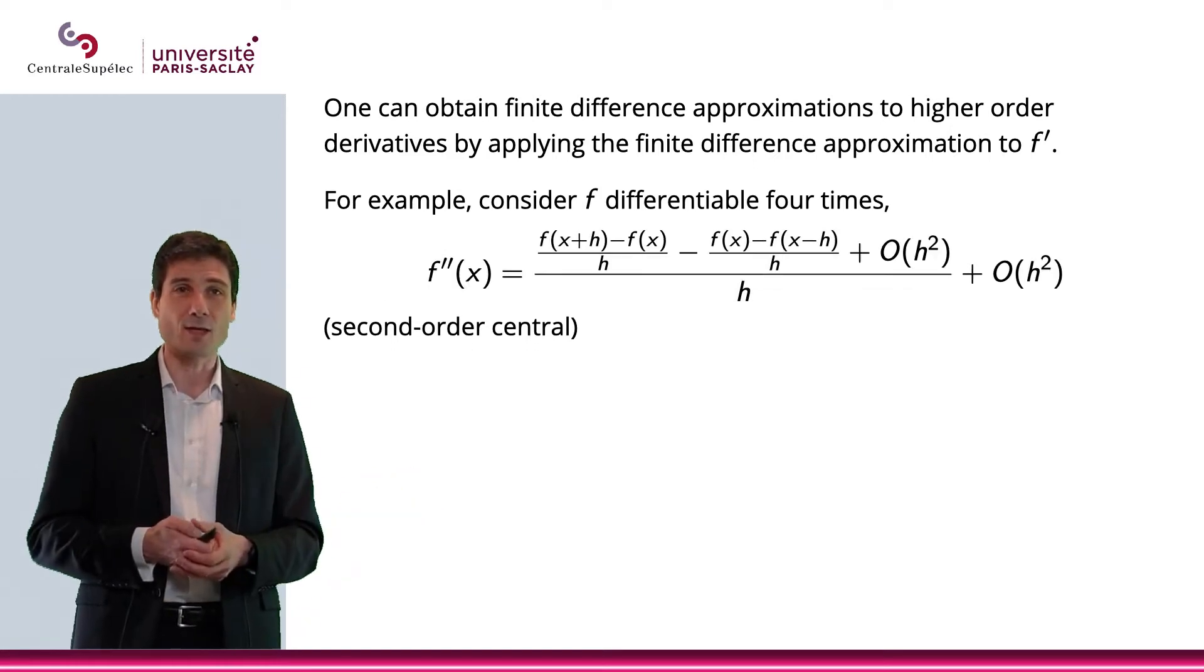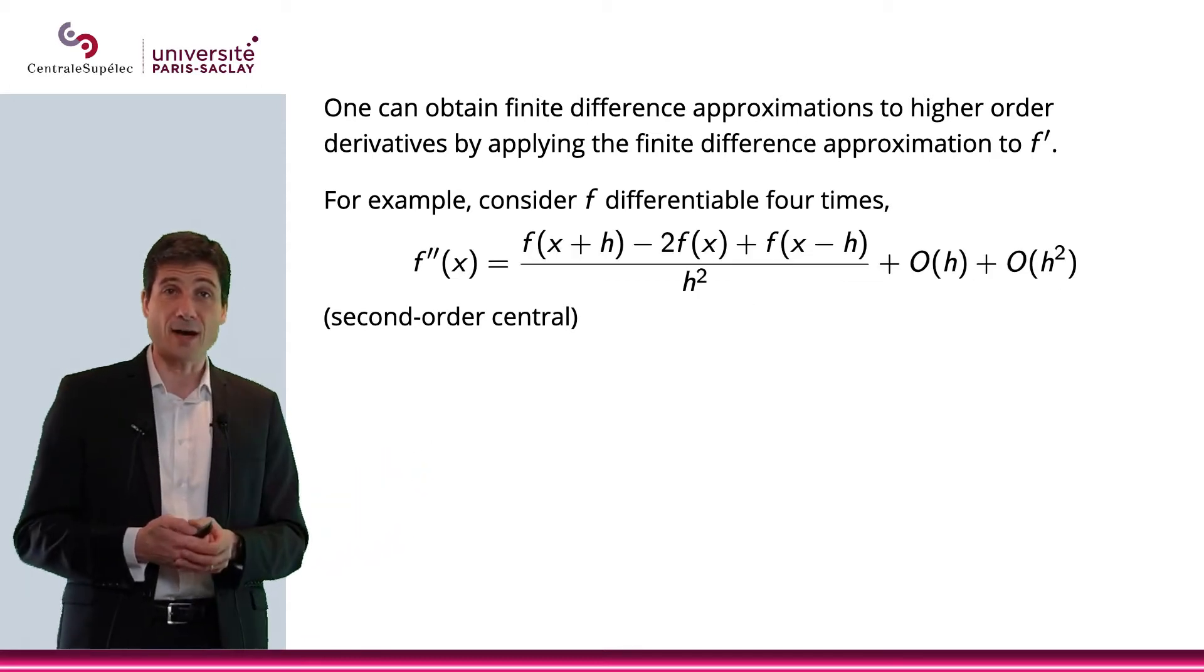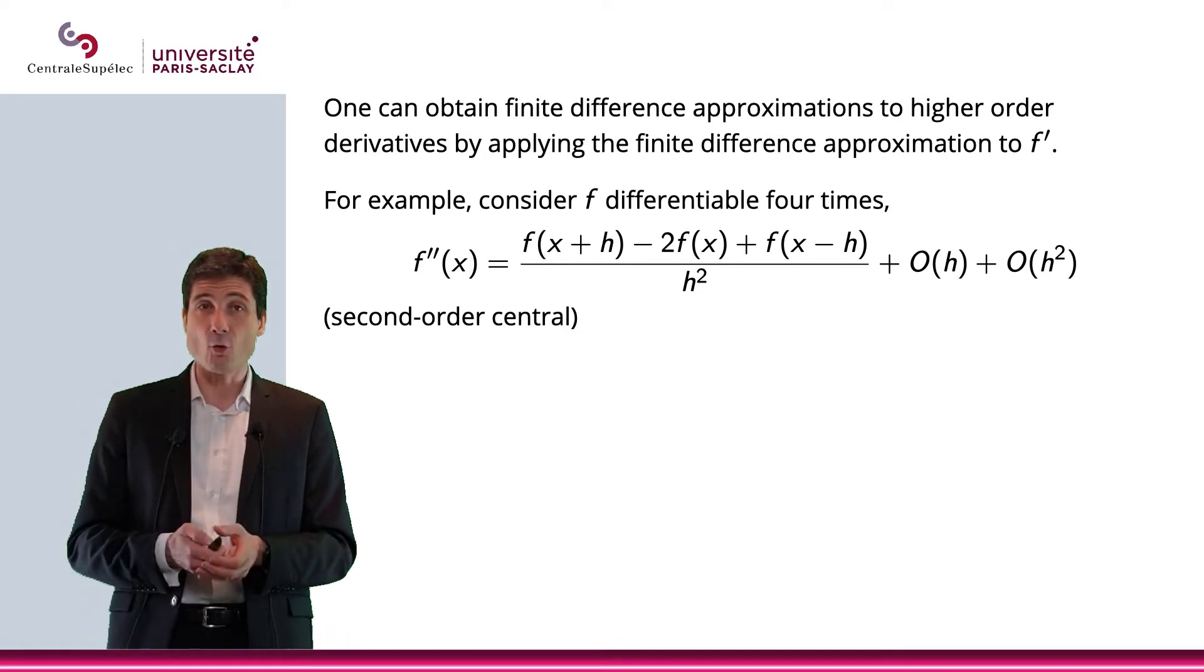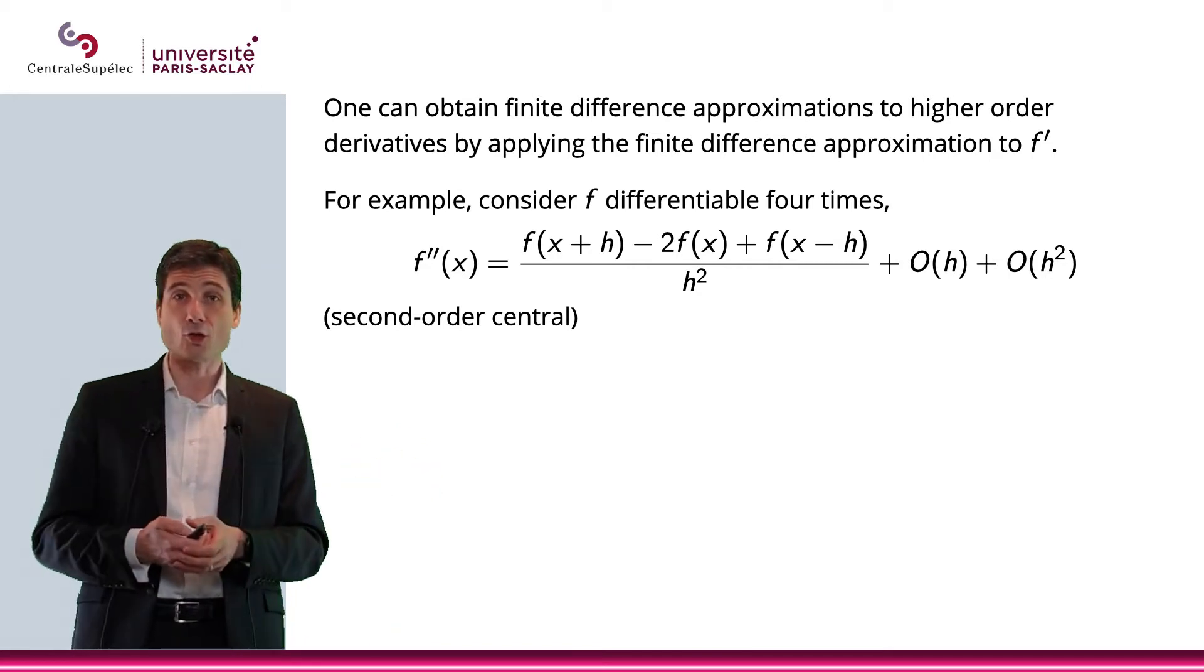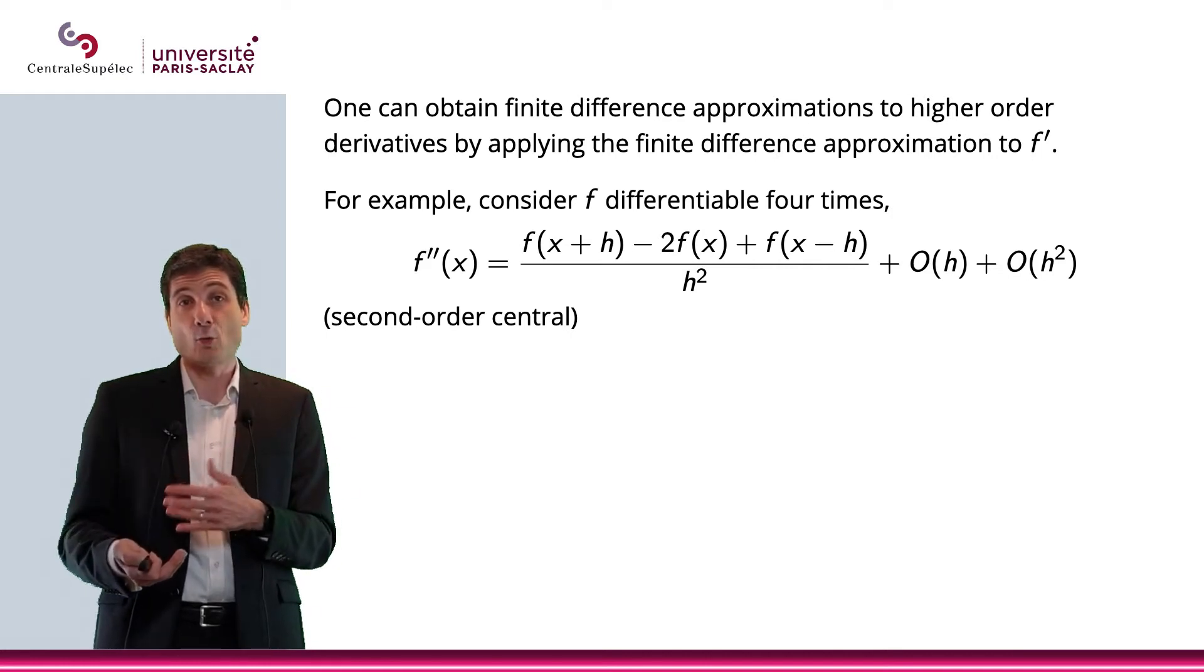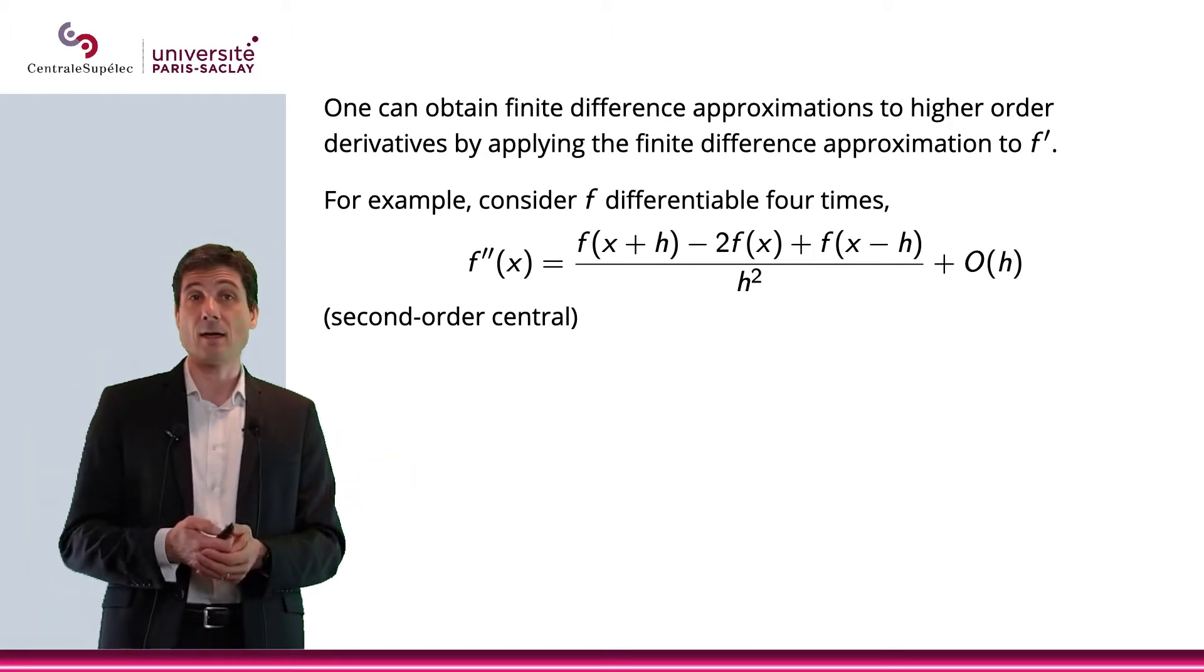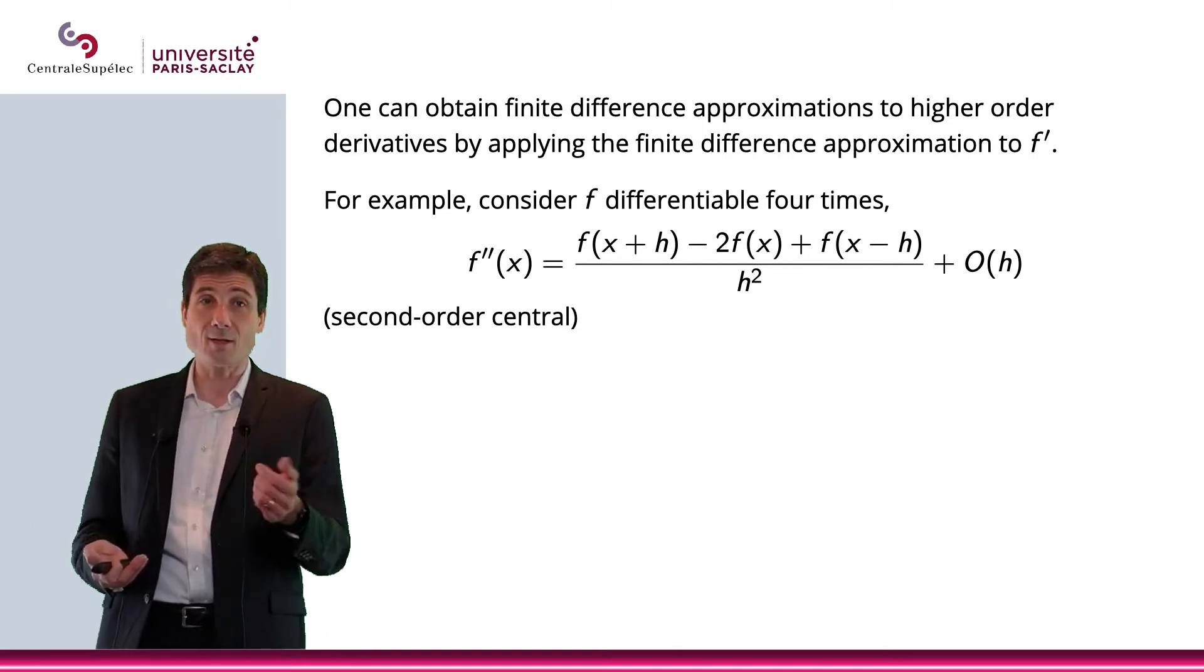Let's put everything together. After simplification, we obtain f(x + h) - 2f(x) + f(x - h) divided by h squared, plus big O of h plus big O of h squared. Obviously, big O of h plus big O of h squared means we have to go with big O of h, unfortunately. Here is the approximation of my second derivative.